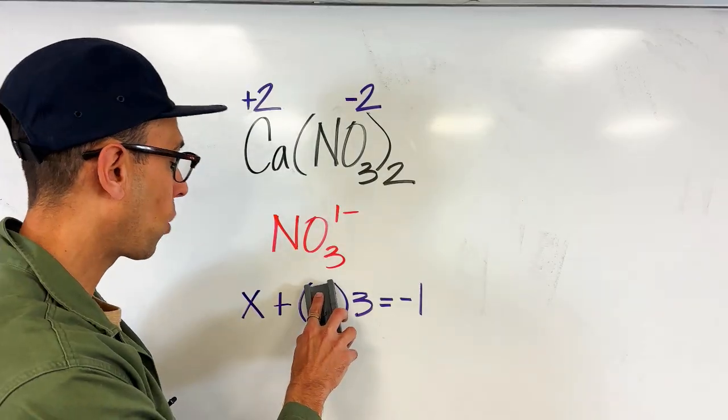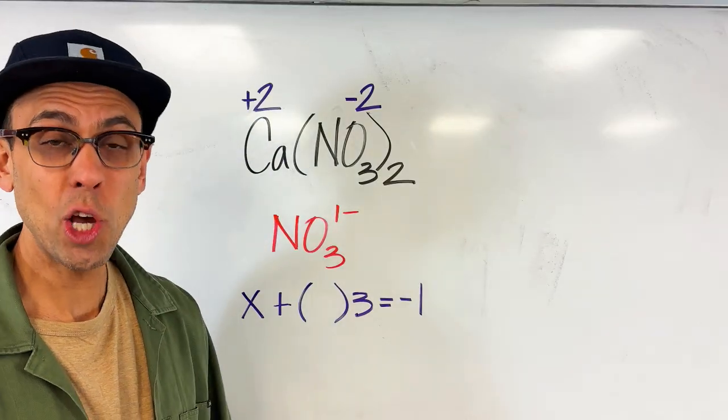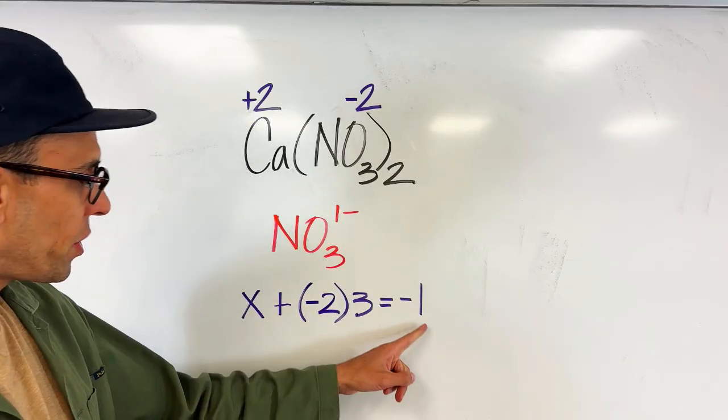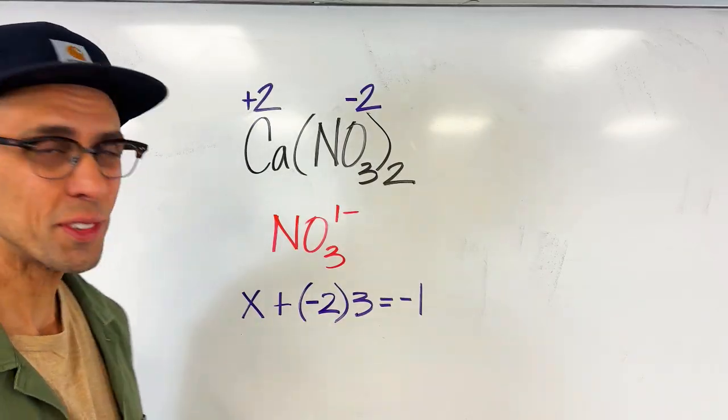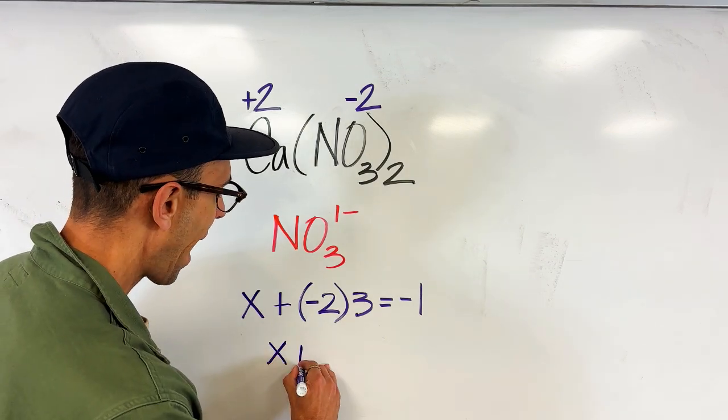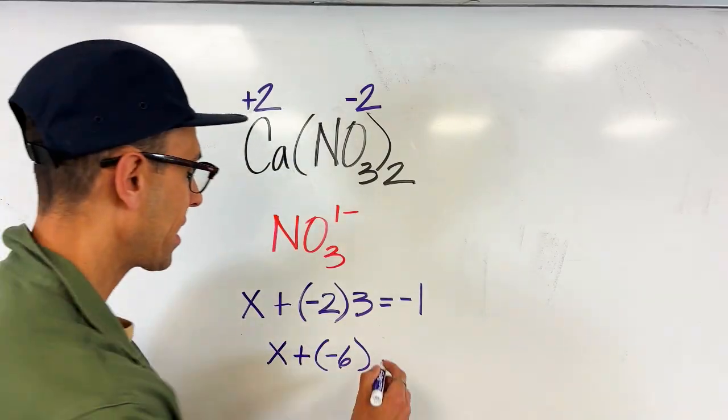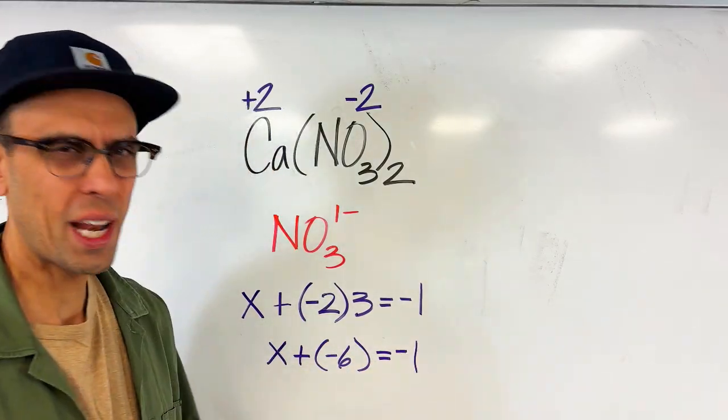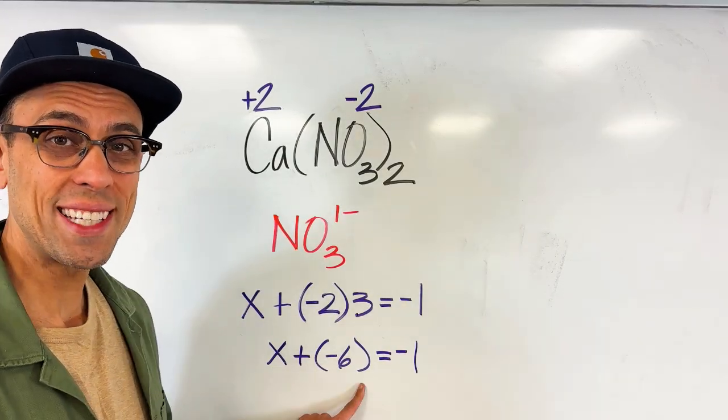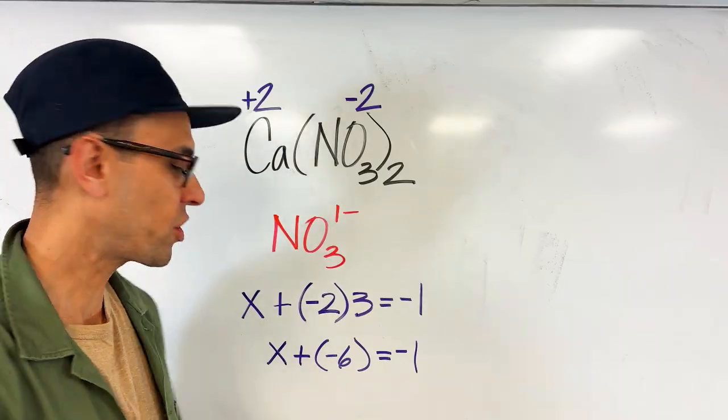Now it turns out that we don't need a variable for the oxidation number of oxygen. We know based on the rule that it's going to be negative two. So now we just have to solve this expression for x which should be pretty simple to do. We're going to say that x added to a minus six, which is the product of negative two and three, equals minus one. So now ask yourself what number would have to go here such that when it's added to a negative six you have a negative one left over.